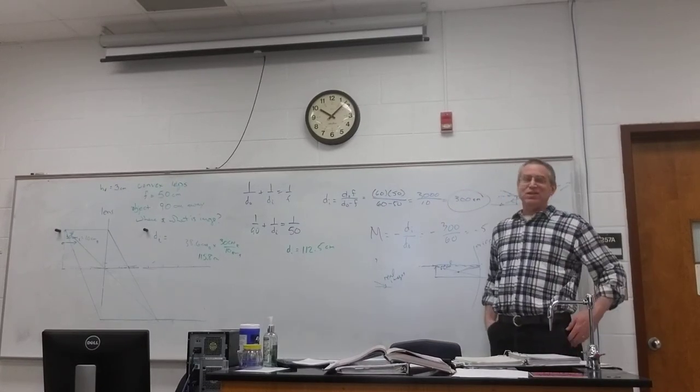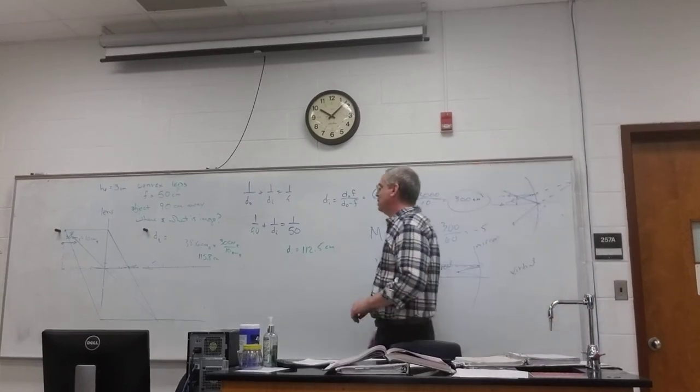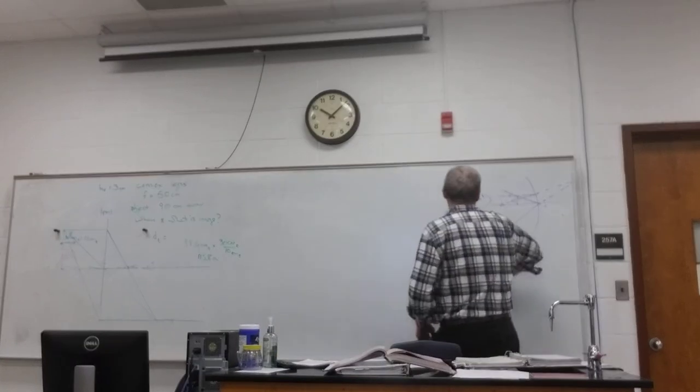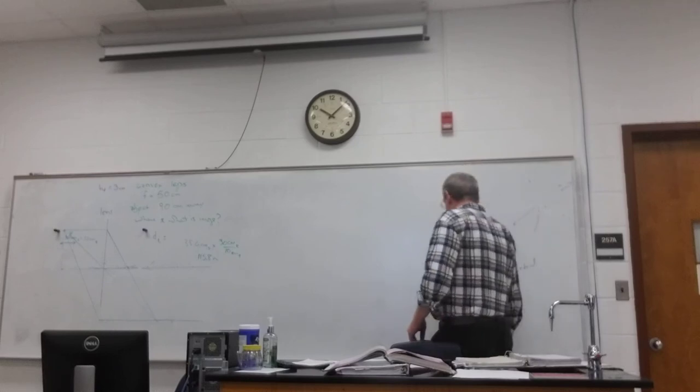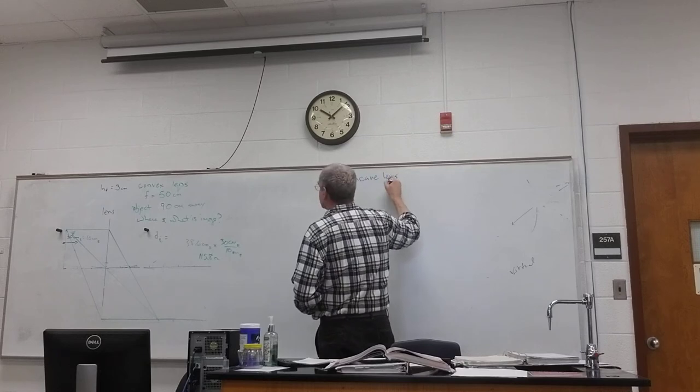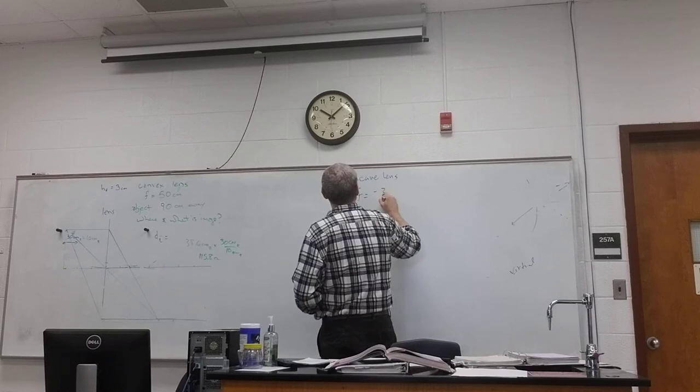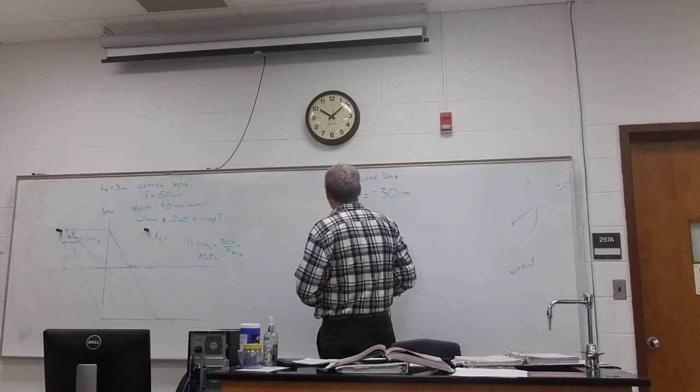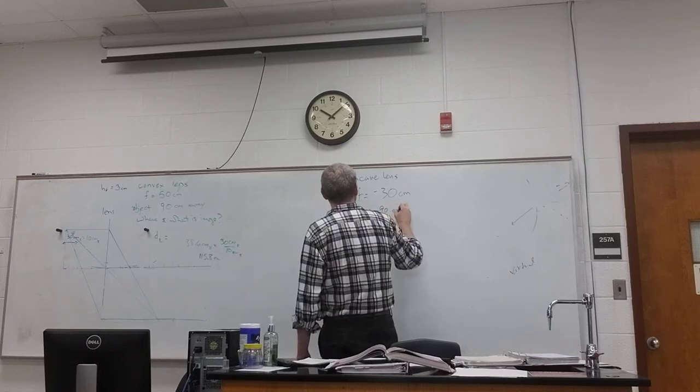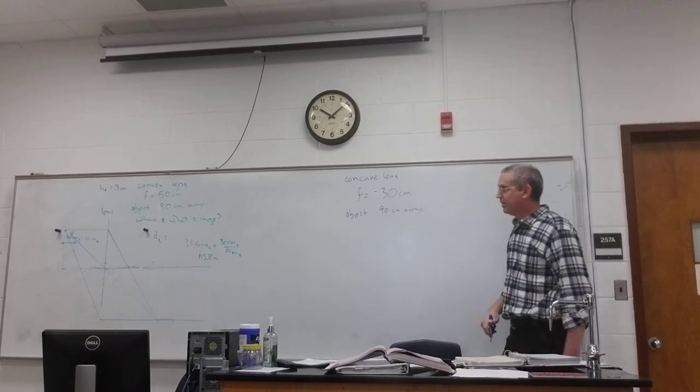All right. Just a simple little lens problem. We're going to do another simple lens problem and then we're going to combine them. I'm not going to draw it out. You're welcome. All right. Concave lens. Focal length is, we'll make it negative 30 centimeters. Objects 90 centimeters away. What do you need? Tell me about the image.